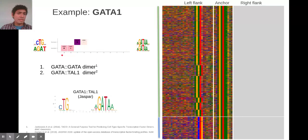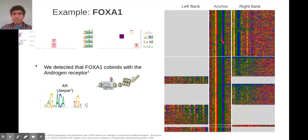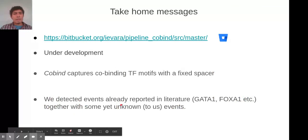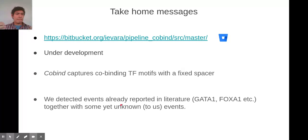Another example is FOXA1, where the co-binding is in the right flank and corresponds to the androgen receptor. The take-home message is that we can capture co-binding events that have a fixed spacing.